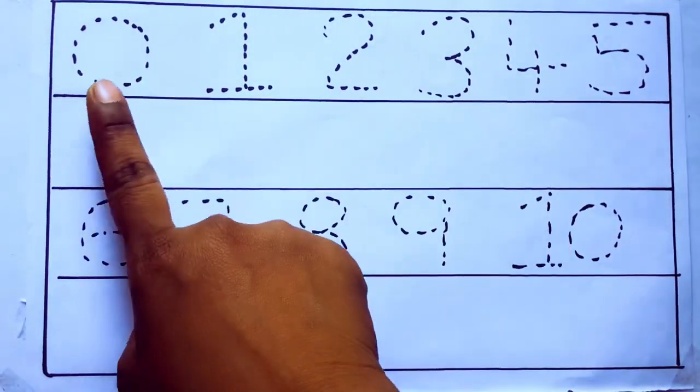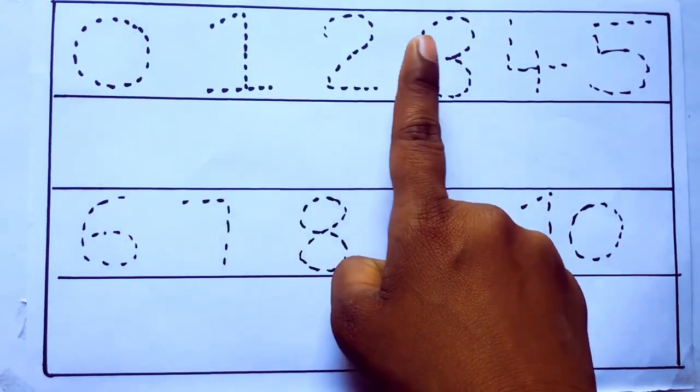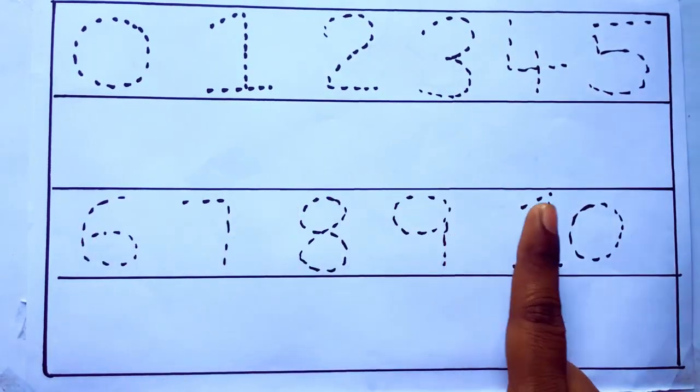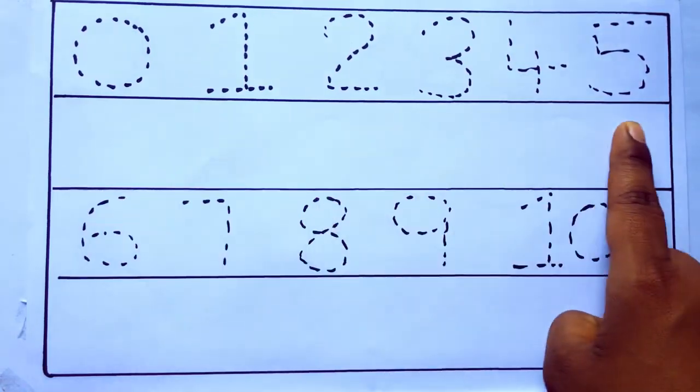0 to 10: 0, 1, 2, 3, 4, 5, 6, 7, 8, 9, 10, and rewriting the numbers.